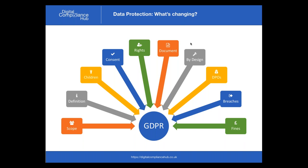There are three key definitions: the data subject — the person whose data it is; the data controller — the person collecting or processing that data; and the data processor — who in some circumstances is also the controller, but may be a separate organisation doing the processing. One of the changes of GDPR is that processors now have responsibilities under the regulation which they don't have under the current Act, where it's all down to the controller.